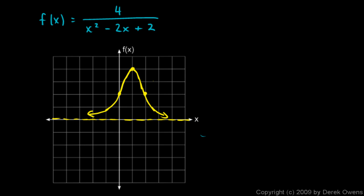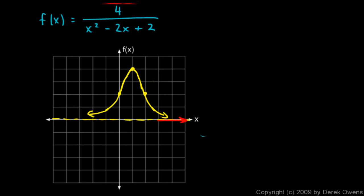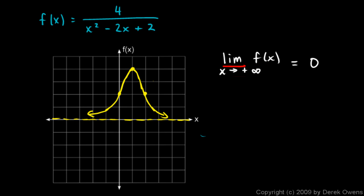As x gets huge, if we put in big numbers for x, the denominator will get huge while the numerator isn't doing anything at all. So as the denominator gets big, the value of the whole fraction approaches 0. We can express this in limit notation: the limit as x approaches positive infinity of this function is 0. This means as x gets really big, this function approaches a limiting value of 0. So all this is using limit notation to describe the horizontal asymptote.